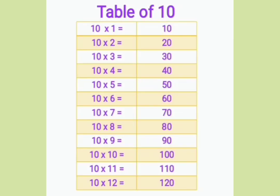Ten ones are ten, ten twos are twenty, ten threes are thirty, ten fours are forty, ten fives are fifty, ten sixes are sixty, ten sevens are seventy, ten eights are eighty, ten nines are ninety, ten tens are one hundred, ten elevens are one hundred ten, ten twelves are one hundred twenty.